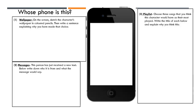Firstly, you are going to pretend that you have found their phone and there are three parts that you are going to create. So the first step is the wallpaper — that means the background — and you are going to sketch the character wallpaper in coloured pencil. You could do a picture as if it were a selfie of them, or a photo of Animal Farm, or anything that you think would most suit your character. Then in the box you are going to write a sentence that explains why you have made that choice.